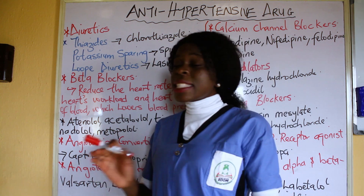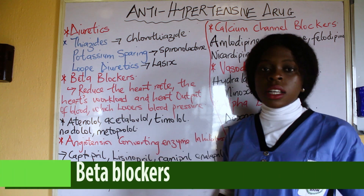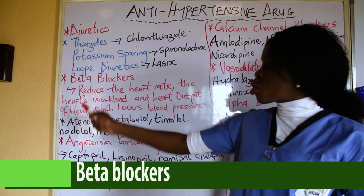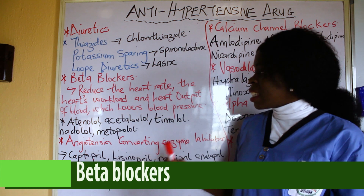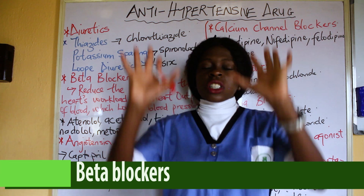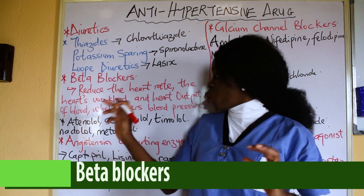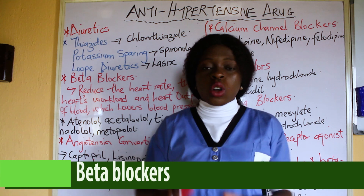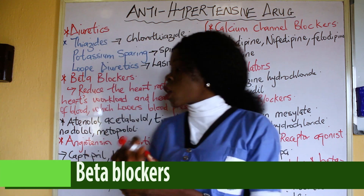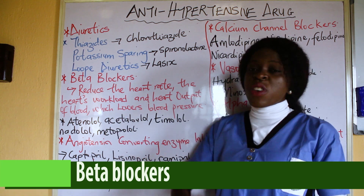The second class of drugs we have is the beta blockers. What do the beta blockers do? They reduce the heart rate, the heart workload, and the heart output. You know the heart pumps blood into circulation — so what these beta blockers do is reduce the heart workload and heart output in such a way that it finally lowers the blood pressure.